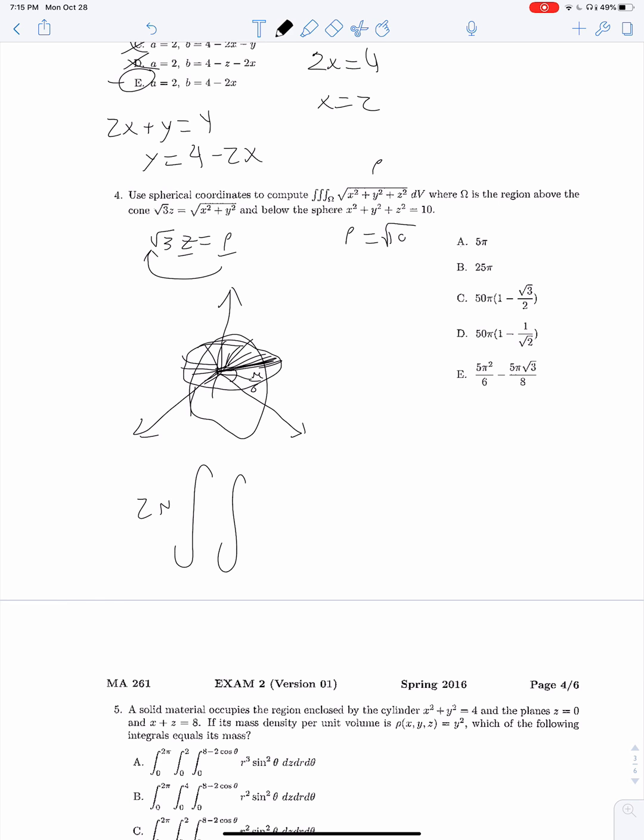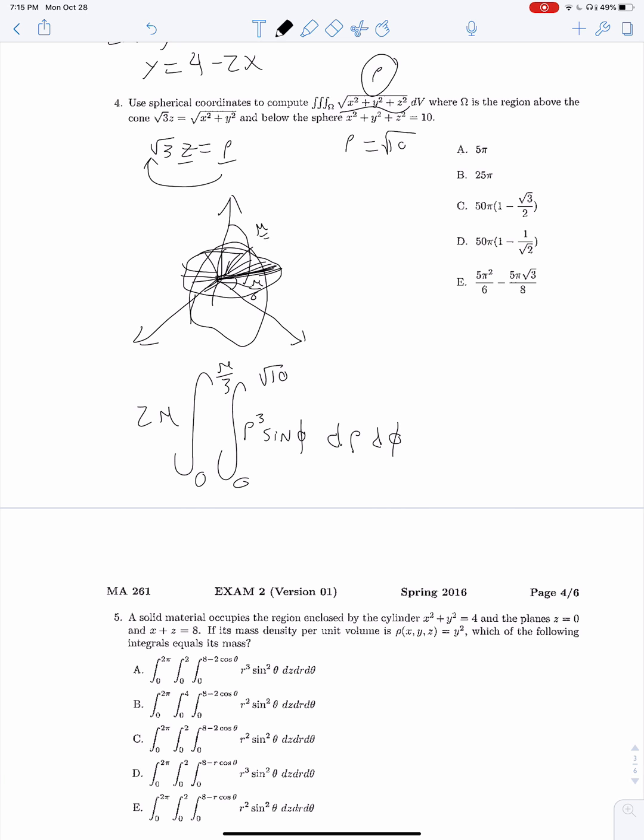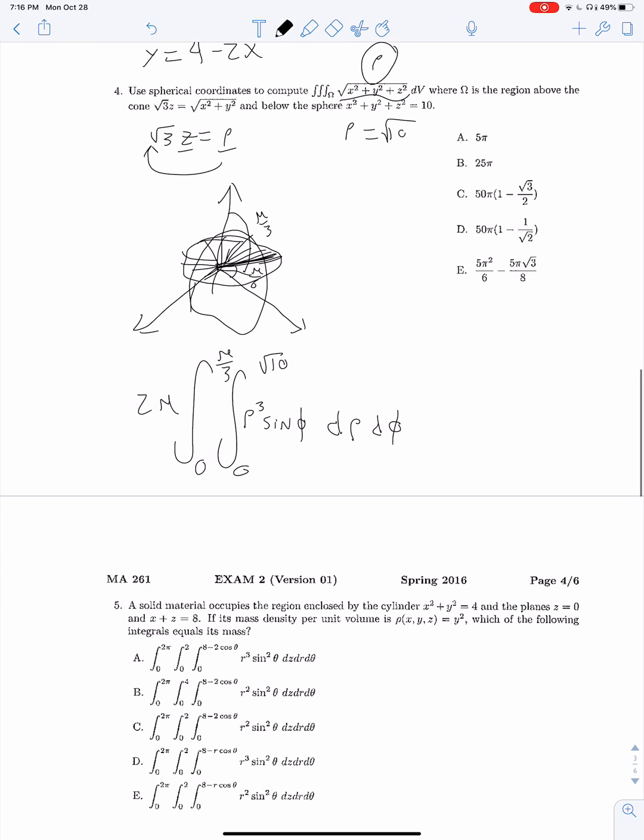We can remove our outer integral and replace it with 2 pi because we're not dependent on theta at all. Our integrand is going to be rho cubed sine phi. We know that rho runs between 0 and root 10, and phi runs between 0 and pi over 3.